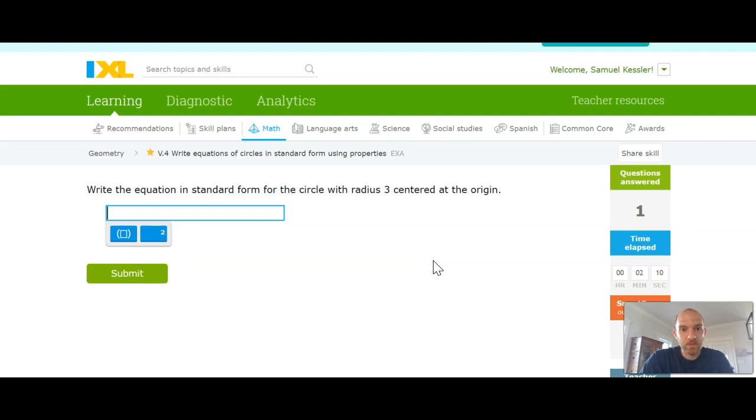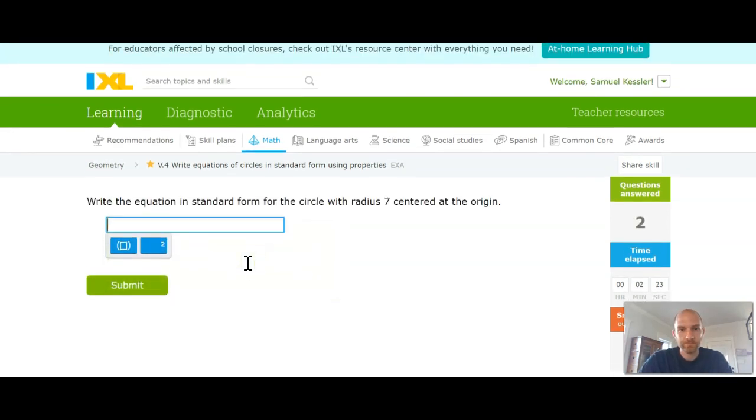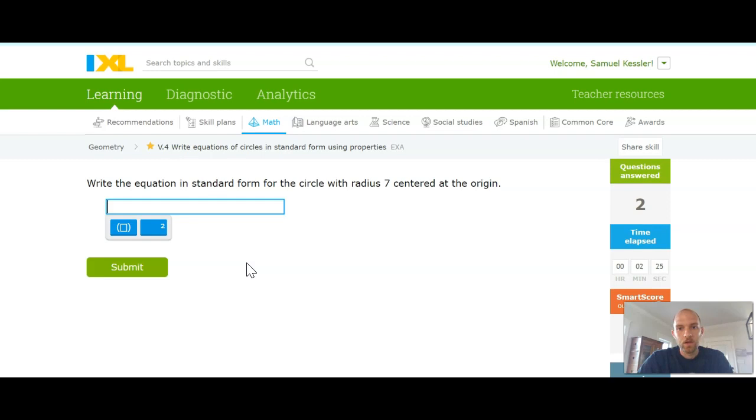Again, this one has a radius of 3 centered at the origin. Anytime we're centered at the origin, x squared plus y squared equals the radius is 3. 3 squared is 9. Centered at the origin, radius is 7, x squared plus y squared is equal to 7 squared is 49.